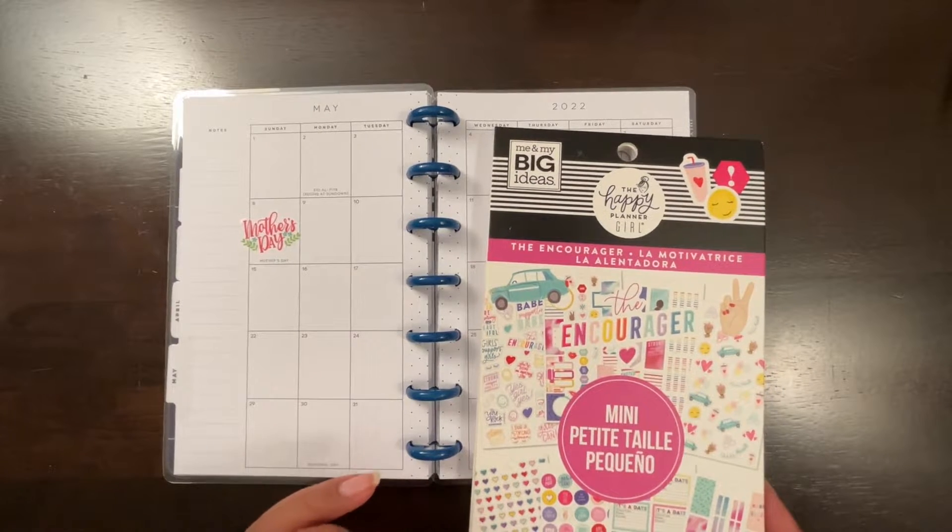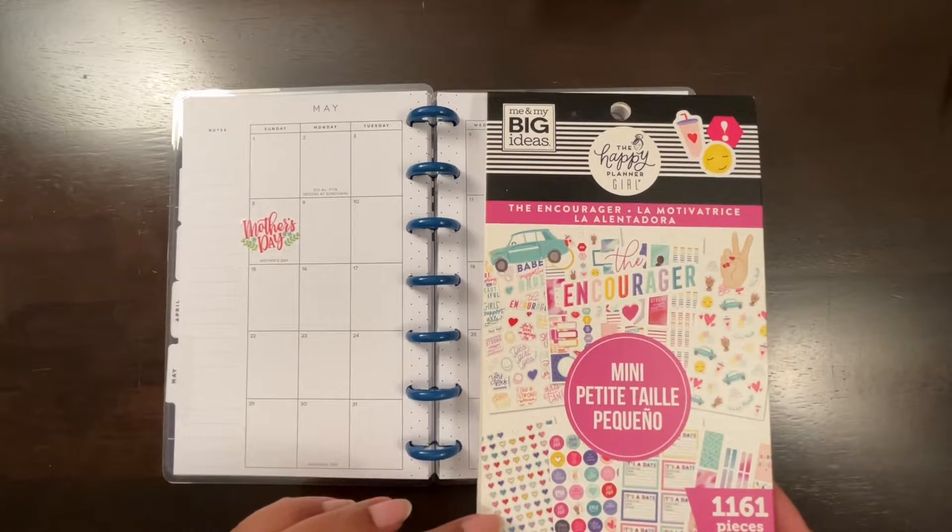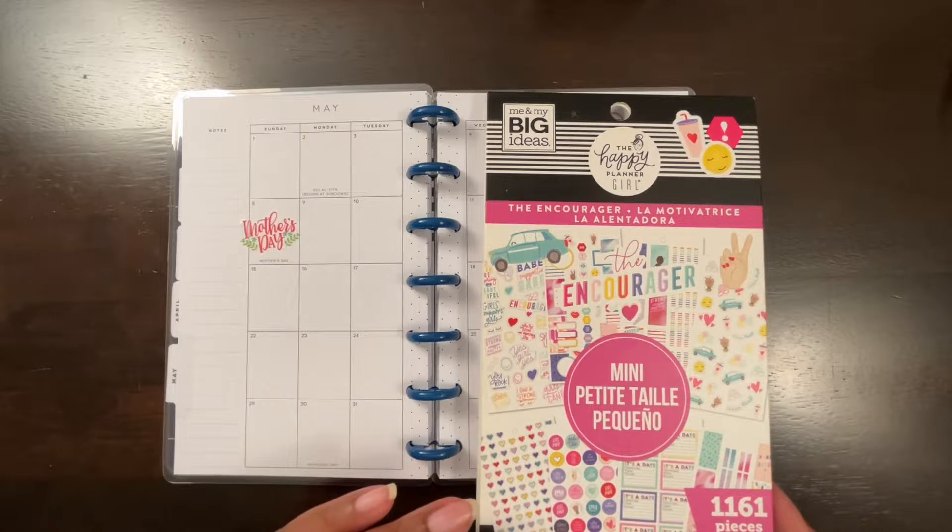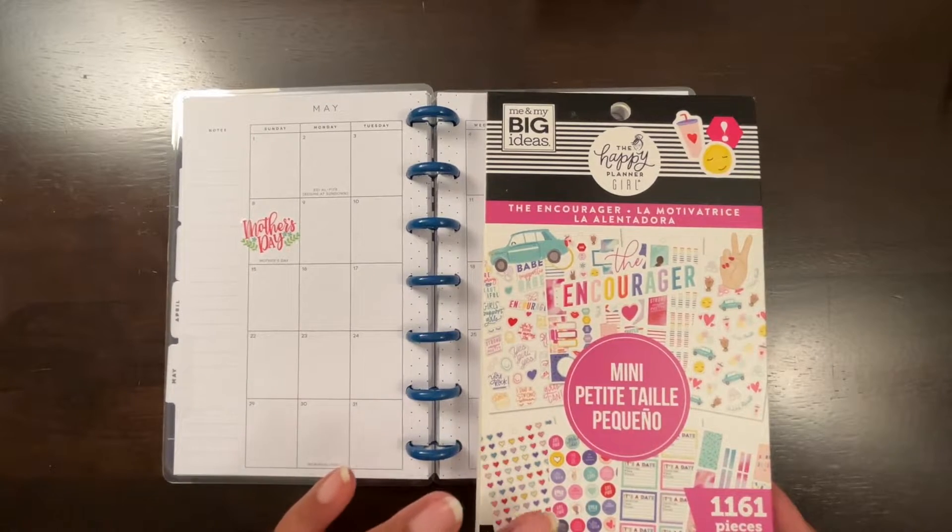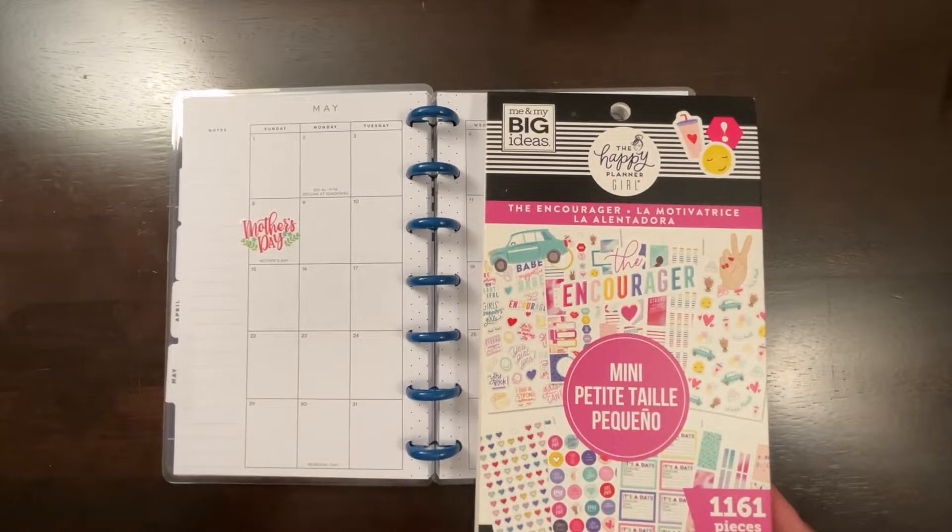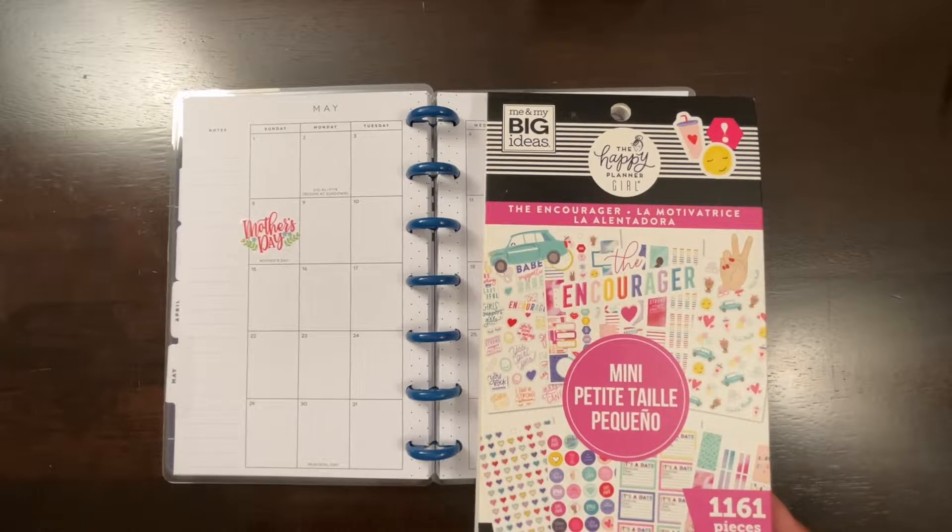And I'm going to use this, the Encourager sticker book by Happy Planner. I'm not sure how old it is. I can't remember when I picked it up. But it's a mini sticker book. I'm not real sure if they still have these. I'll definitely check the website and if they do, I will link it below. But, it's just a mini planner. Mini planner, mini stickers.